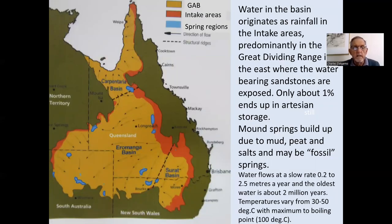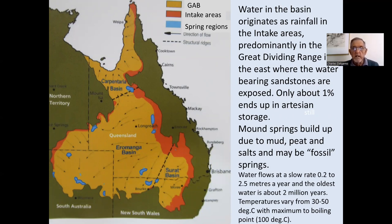Here we show the intake areas, and in blue, the region of natural springs, some of which over the years have ceased flowing. Little arrows show the direction of flow of groundwaters, and a dotted line shows the structural ridge separating the Surat Basin from the Eromanga Basin. It's rainfall in the intake areas which differs for different stratigraphic units within the basin, and only about 1% actually ends up in the artesian strata.